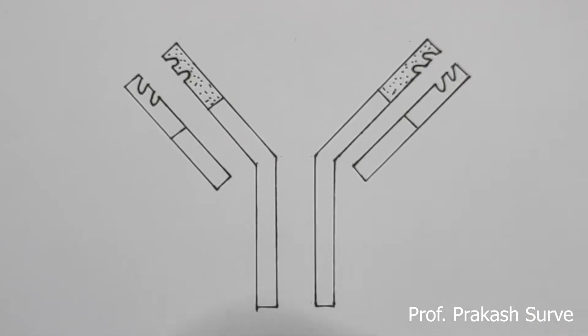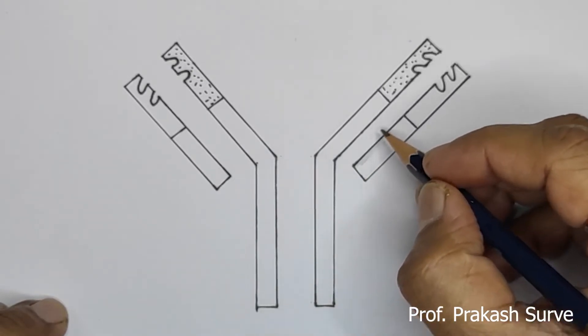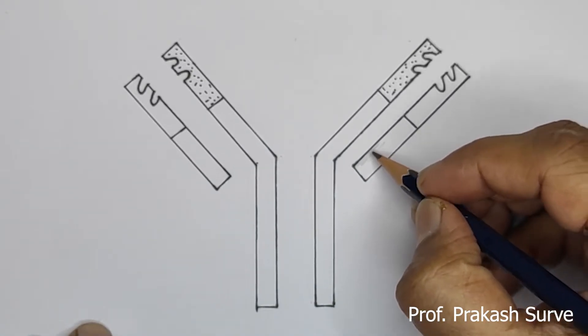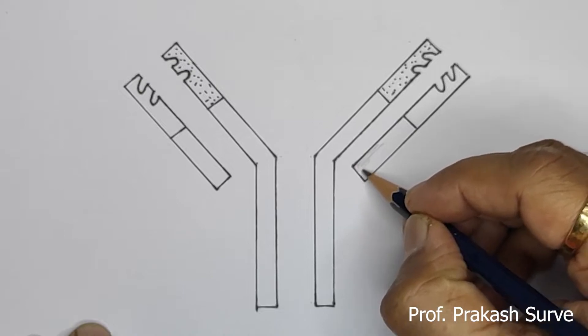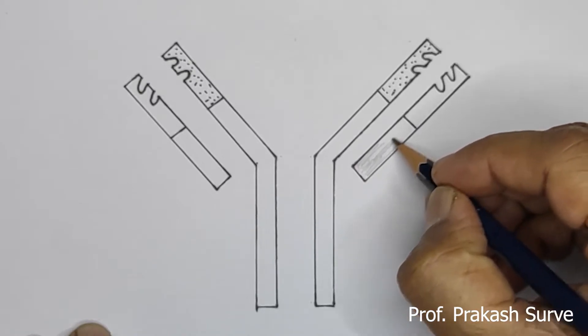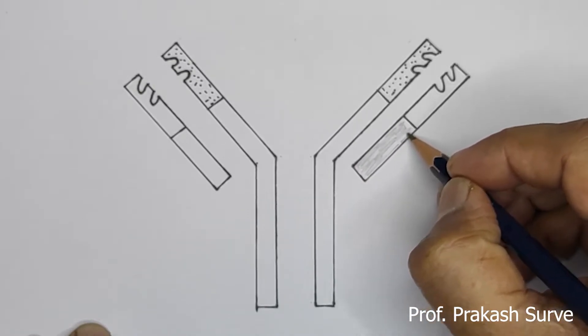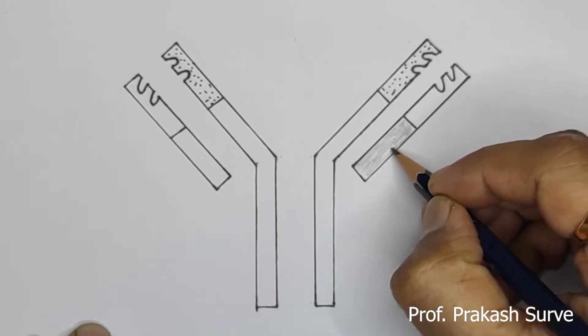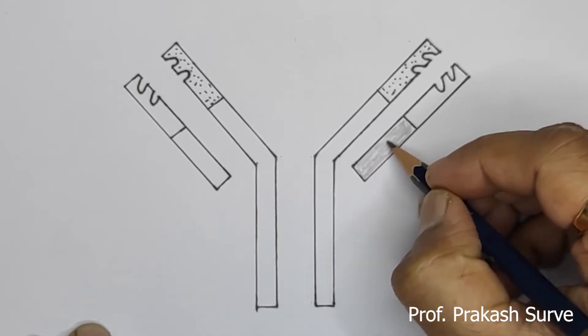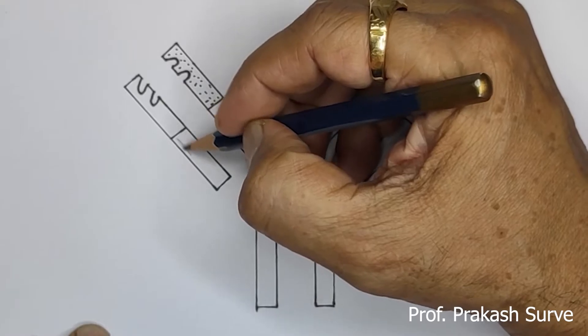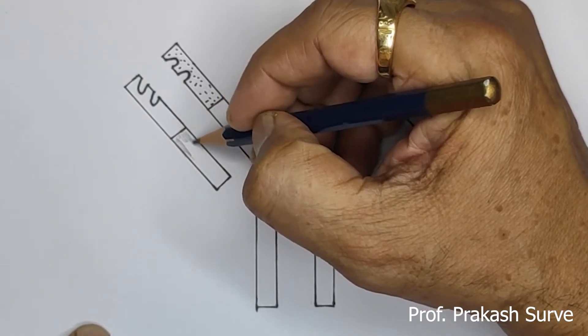Now we will shade this. So this shading indicates the constant region of the light chain. See here also, shade this.